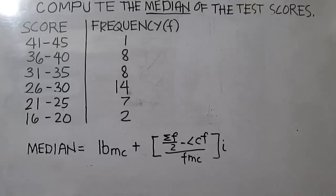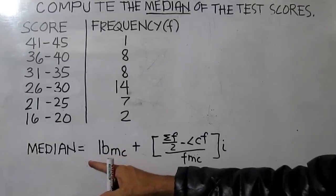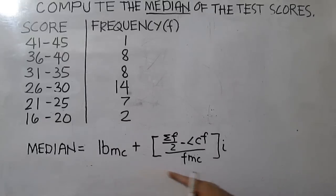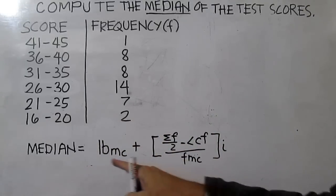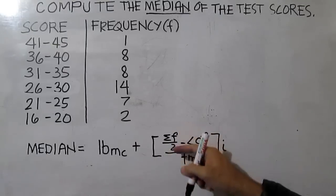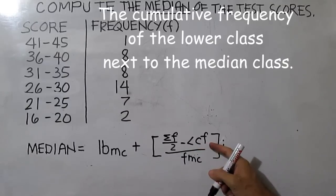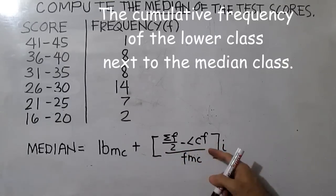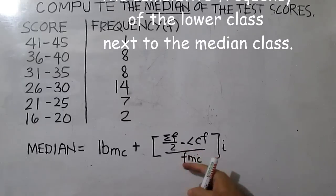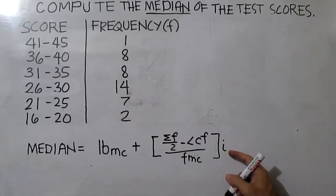Compute the median of the test scores. To compute the median for grouped data, use this formula. Median is equal to: this is the lower boundary of the median class, this is half of the total frequency, this is the cumulative frequency of the lower class next to the median class, this is the frequency of the median class, and this is the class width.